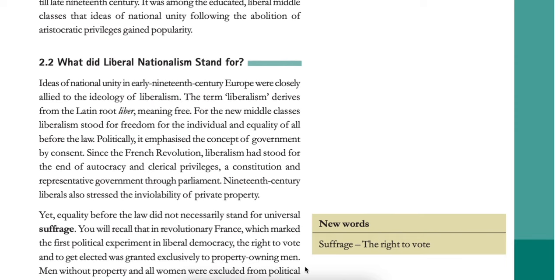Nationalism in early 19th century Europe was closely allied to the ideology of liberalism. The term liberalism derives from the Latin root liber, meaning free. For the new middle classes, liberalism stood for freedom for the individual and equality of all before the law. Politically, it emphasized the concept of government by consent. Since the French Revolution, liberalism had stood for the end of autocracy and clerical privileges, a constitution, and representative government through parliament. 19th-century liberals also stressed the inviolability of private property.